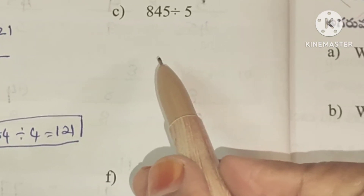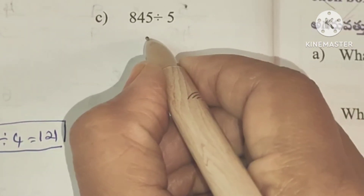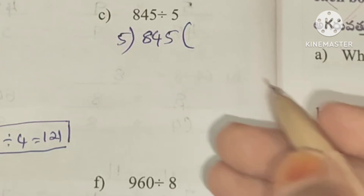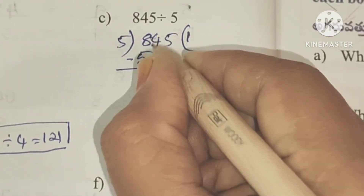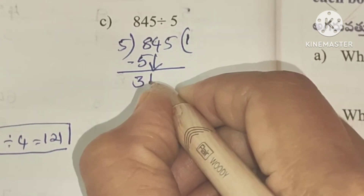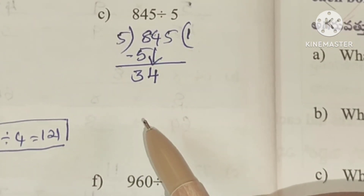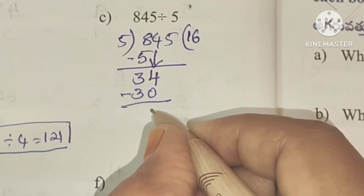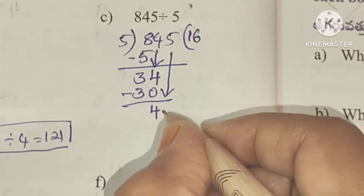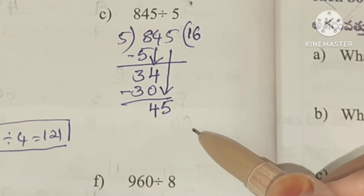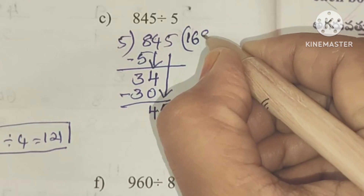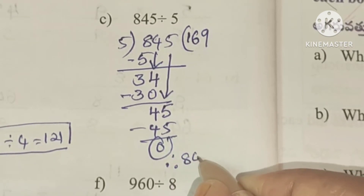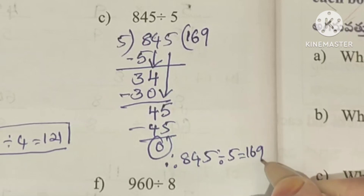C: 845 divided by 5. First number 8: 5 ones are 5, after subtracting 8 minus 5 equals 3. Next number 4 comes down making 34. In the 5 times table, 5 sixes are 30; 34 minus 30 equals 4. Next number 5 comes down making 45: 5 nines are 45, after subtracting 0 remains. So 845 divided by 5 equals 169.